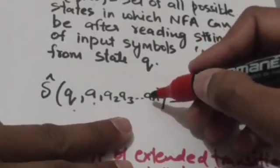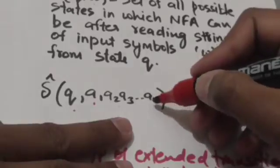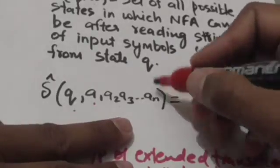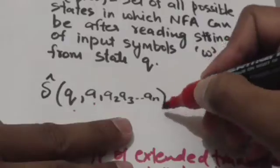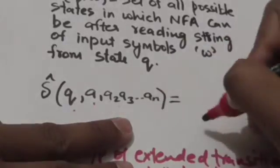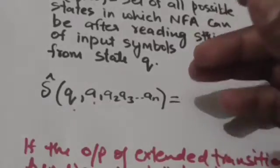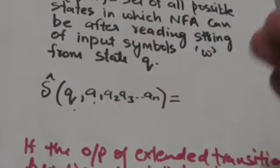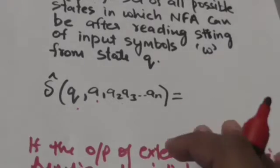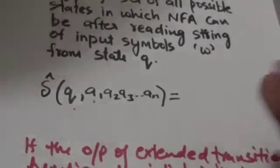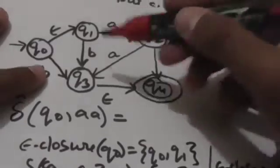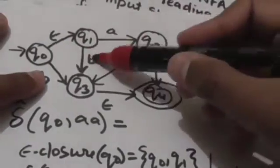We will repeat this procedure up to the last symbol of the string, that is An. When we apply An to the set of states, we will get a set of states. Then again, whatever set of states we get as a result, we will take the empty closure of that set of states. It will be more clear after this example. Now consider this NFA with empty transitions.